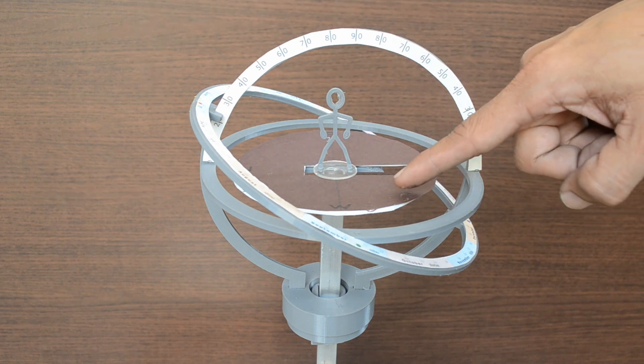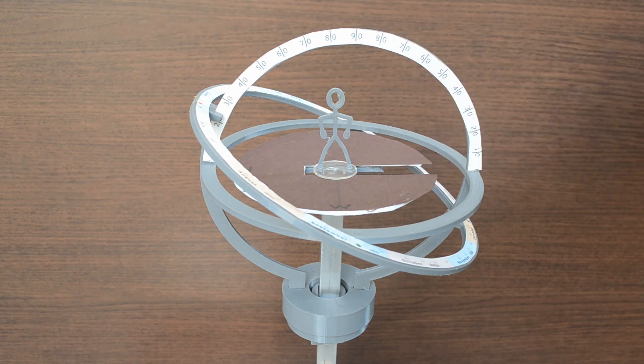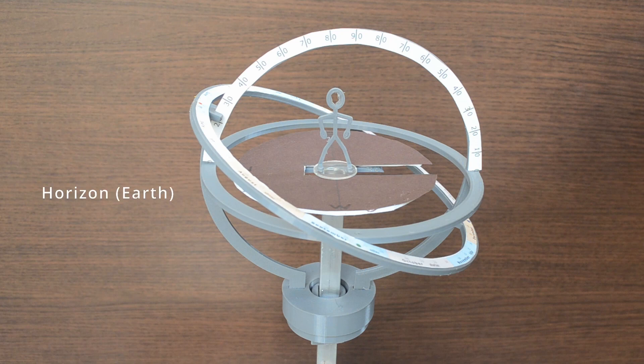This plane represents the observer's horizon. These are the cardinal directions for the observer: east, west, north and south.